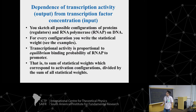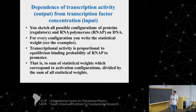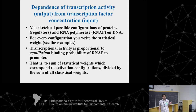The basic assumption is that transcription activity is proportional to the equilibrium binding probability of RNA polymerase to the promoter. The gene is transcribed only when RNA polymerase is bound. So you sum all statistical weights corresponding to activating configurations — those where RNA polymerase is bound — divided by the sum of all statistical weights, i.e., the partition function.